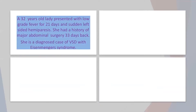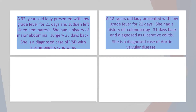I will start with a few vignettes. The first is a 32-year-old lady presented with low grade fever for 21 days and sudden left-sided hemiparesis. She had a history of major abdominal surgery 33 days back and is a diagnosed case of ventricular septal defect with Eisenmenger syndrome. The second case is a 42-year-old lady presented with low grade fever for 21 days, with a history of colonoscopy 31 days back, diagnosed with ulcerative colitis and aortic valvular disease.